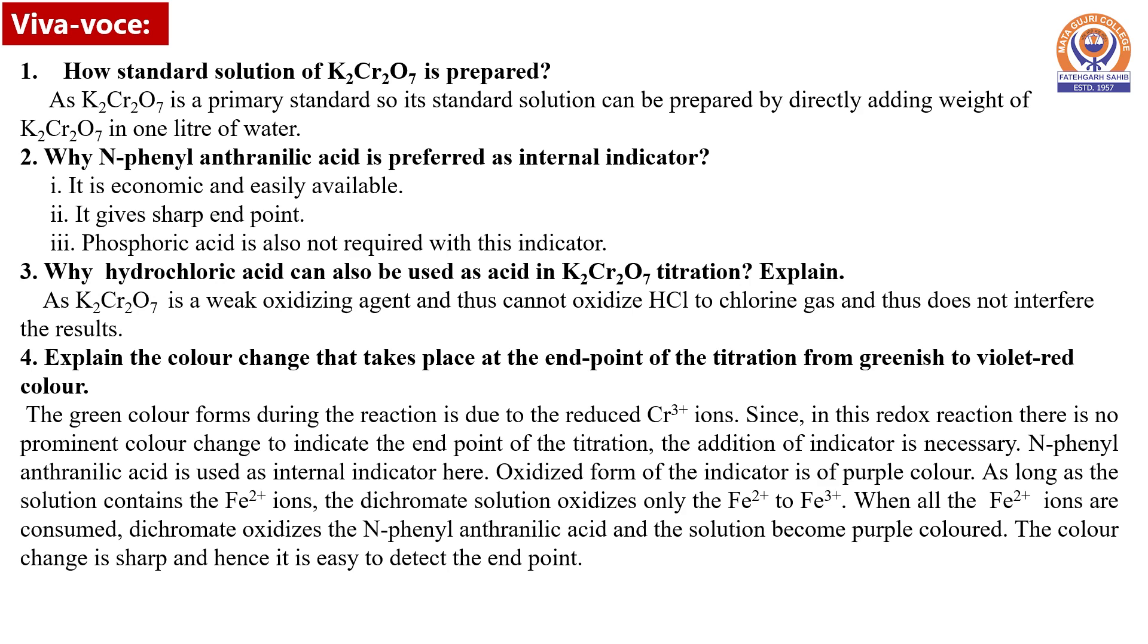Explain the color change that takes place at the endpoint of the titration from greenish to violet-red color. The green color formed during the reaction is due to reduced chromium 3 ions. Since in this redox reaction there is no prominent color change to indicate the endpoint of the titration, the addition of indicator is necessary.